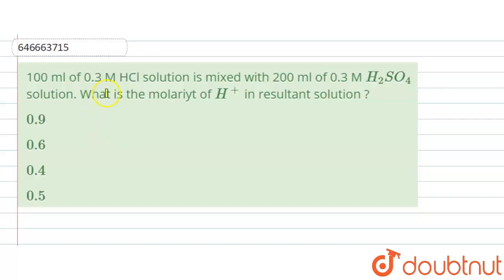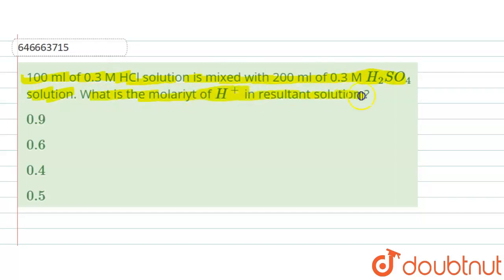The question is: 100 ml of 0.3 molar HCl solution is mixed with 200 ml of 0.3 molar H₂SO₄ solution. What is the molarity of H⁺ in the resultant solution?